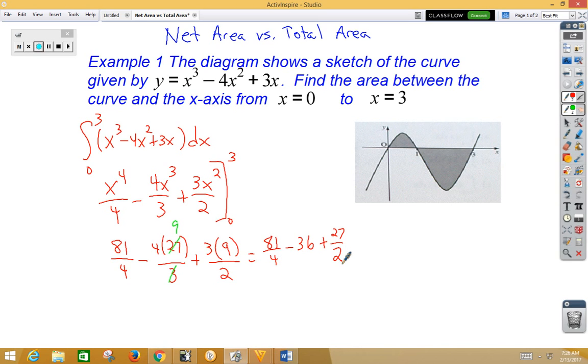AP will not bust you for not reducing. If we do want to reduce further, we would make a common denominator of 4. We would get 81 over 4 minus 144 over 4 plus 54 over 4, which would give us negative 39 over 4. Notice our answer in this case is negative, and the reason that's negative is because the area under the curve is significantly larger than the area above the x-axis.